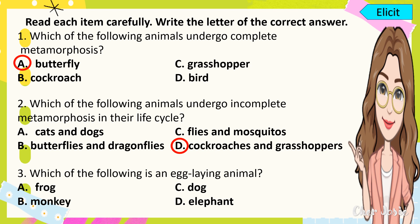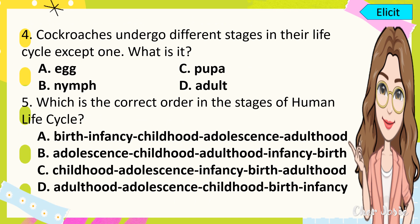For number 3, which of the following is an egg-laying animal? The correct answer is letter A, frog. For number 4, cockroaches undergo different stages in their life cycle except one. What is it? The correct answer is letter C, pupa. For number 5, which is the correct order in the stages of the human life cycle? The best answer is letter A: birth, infancy, childhood, adolescence, adulthood.